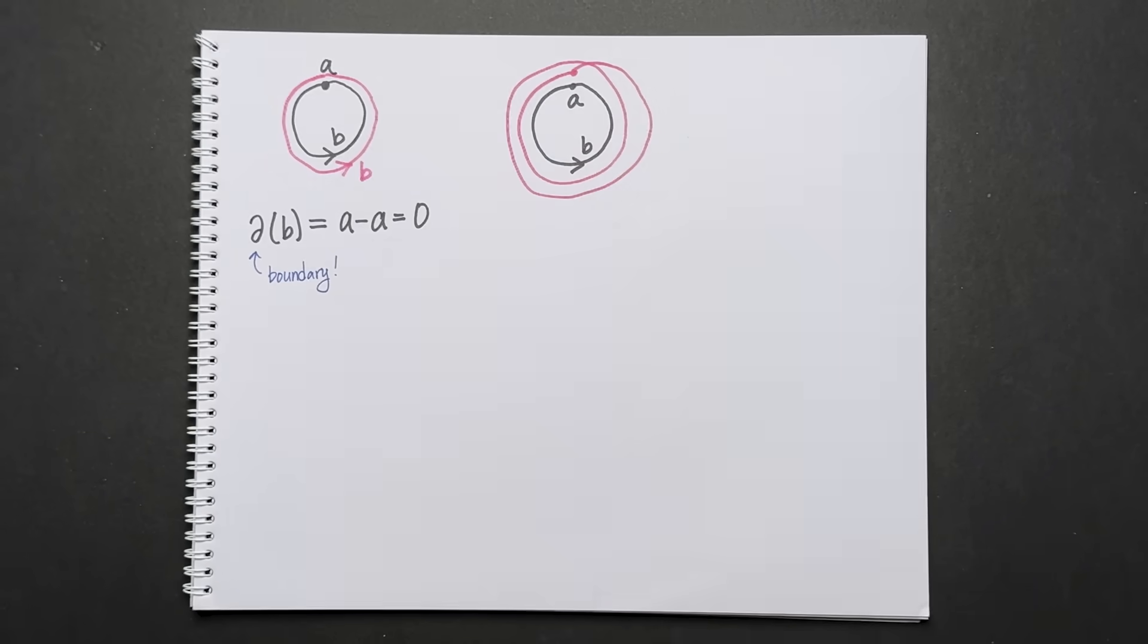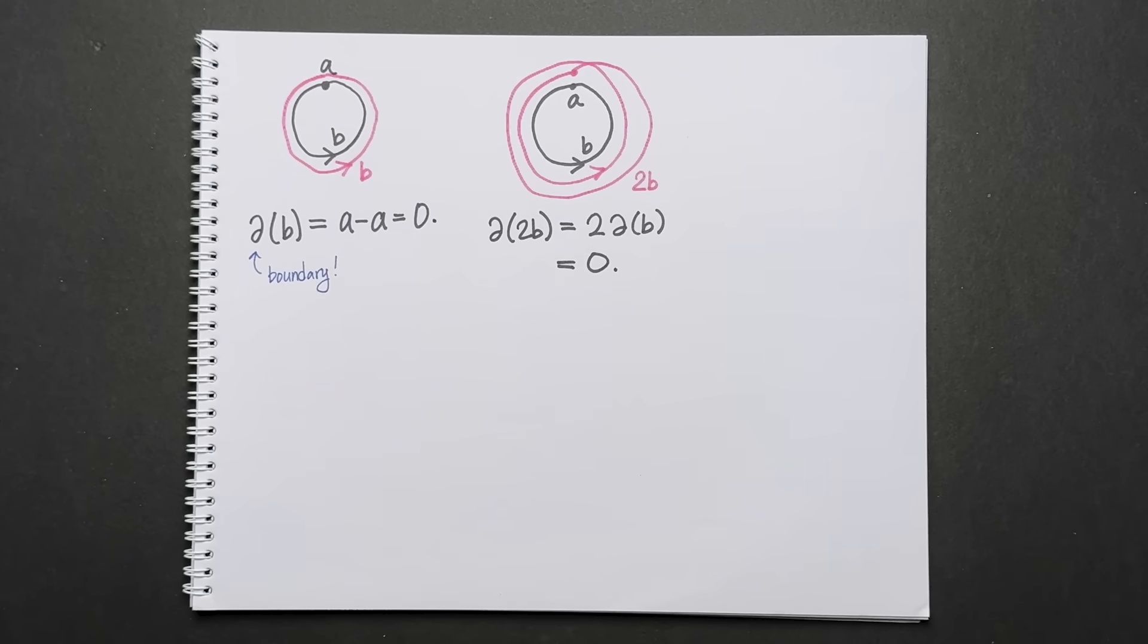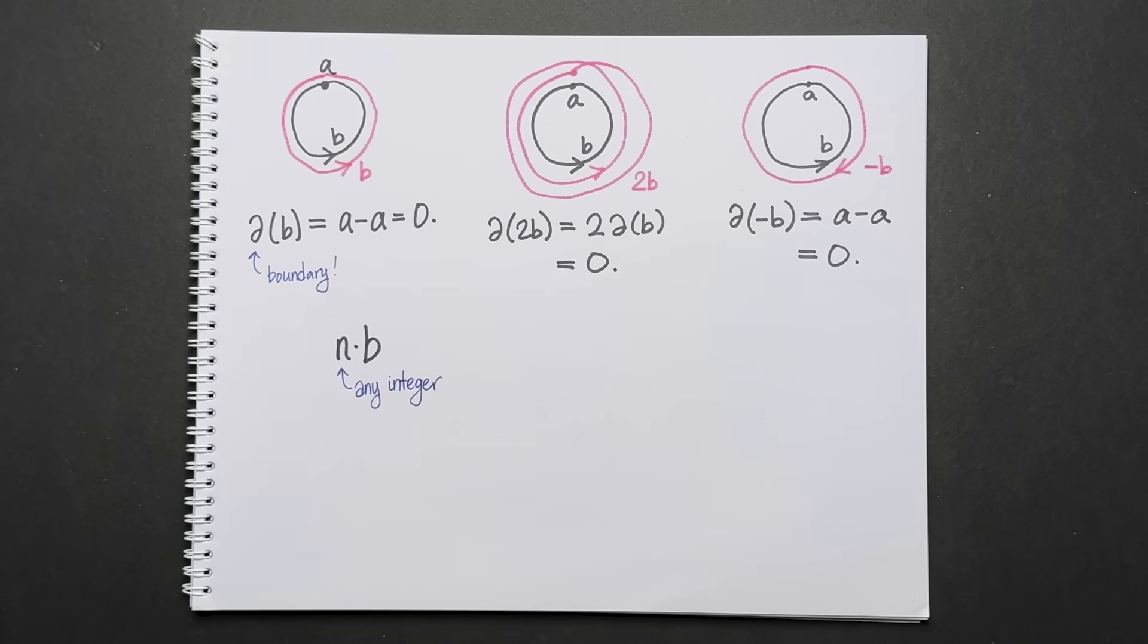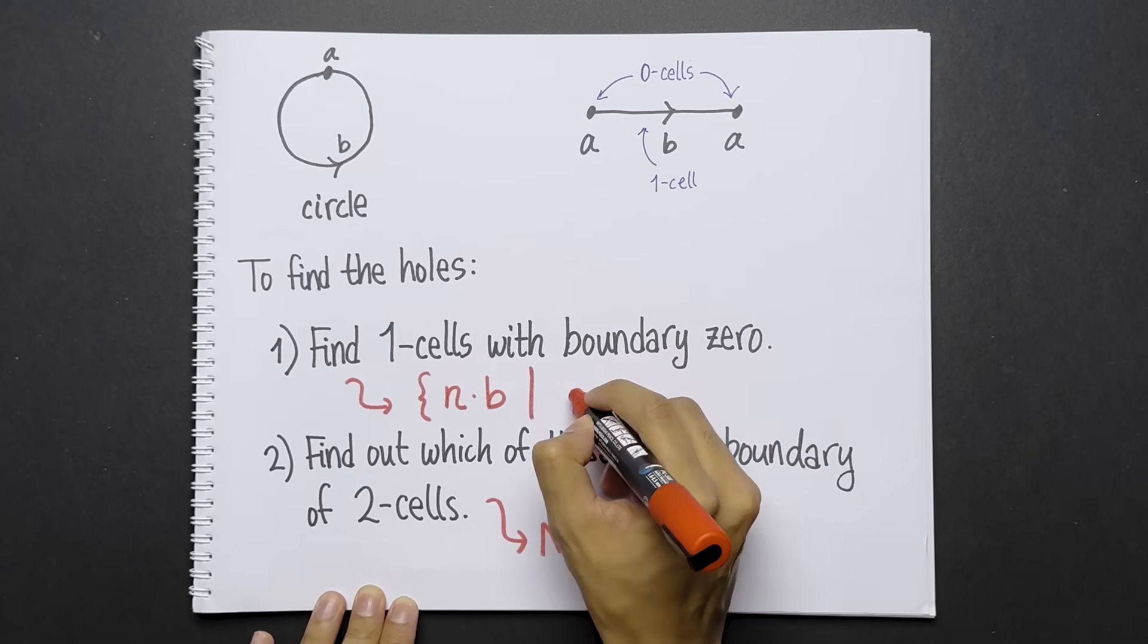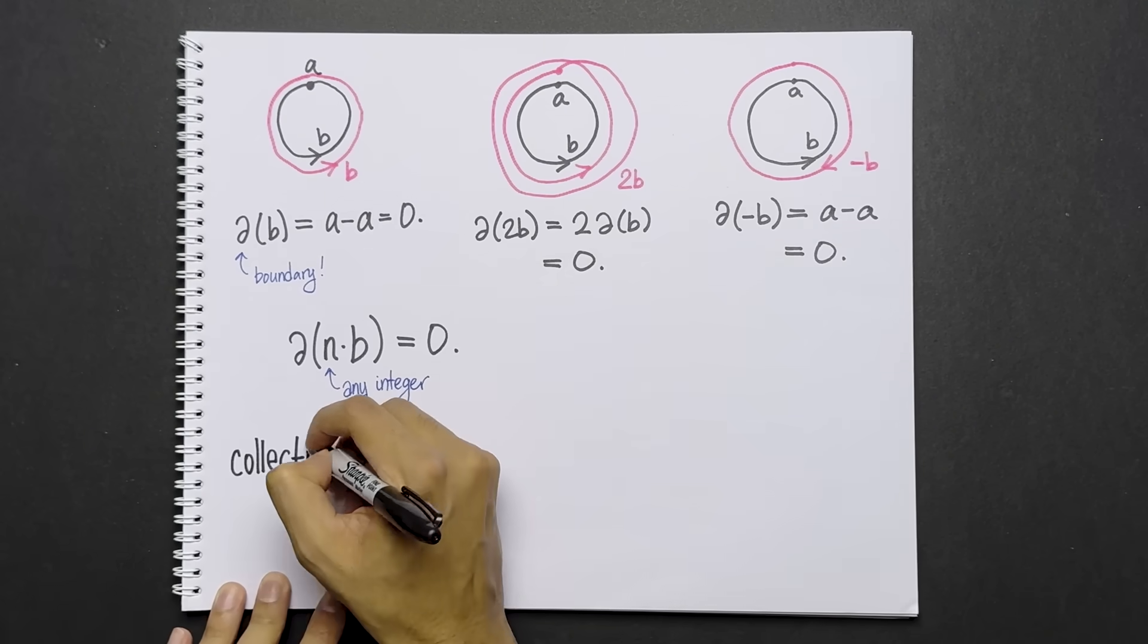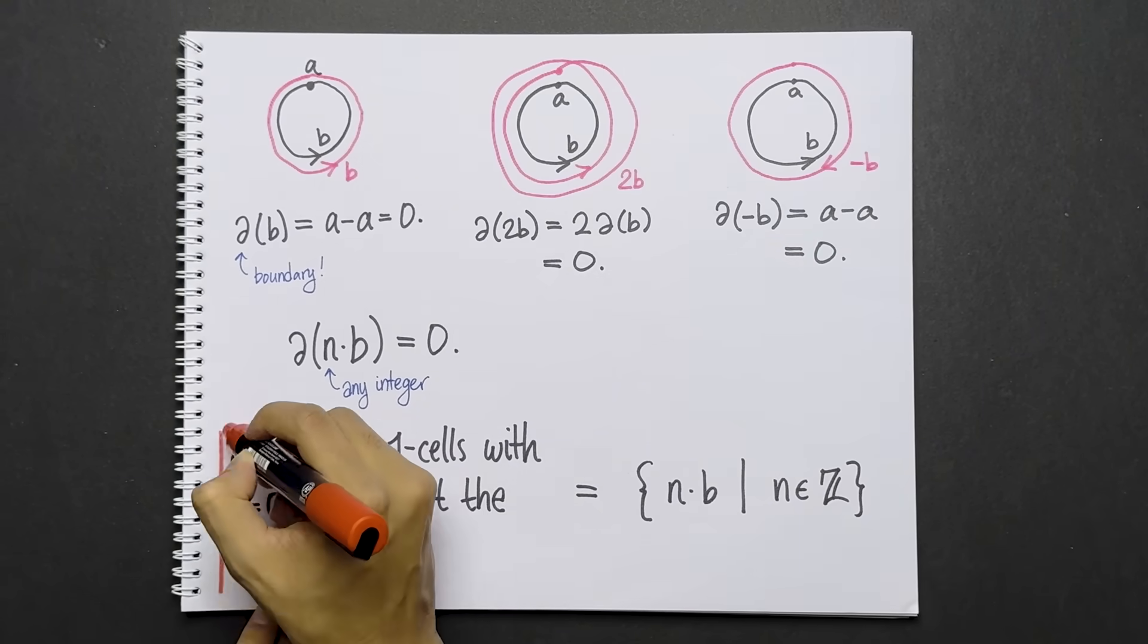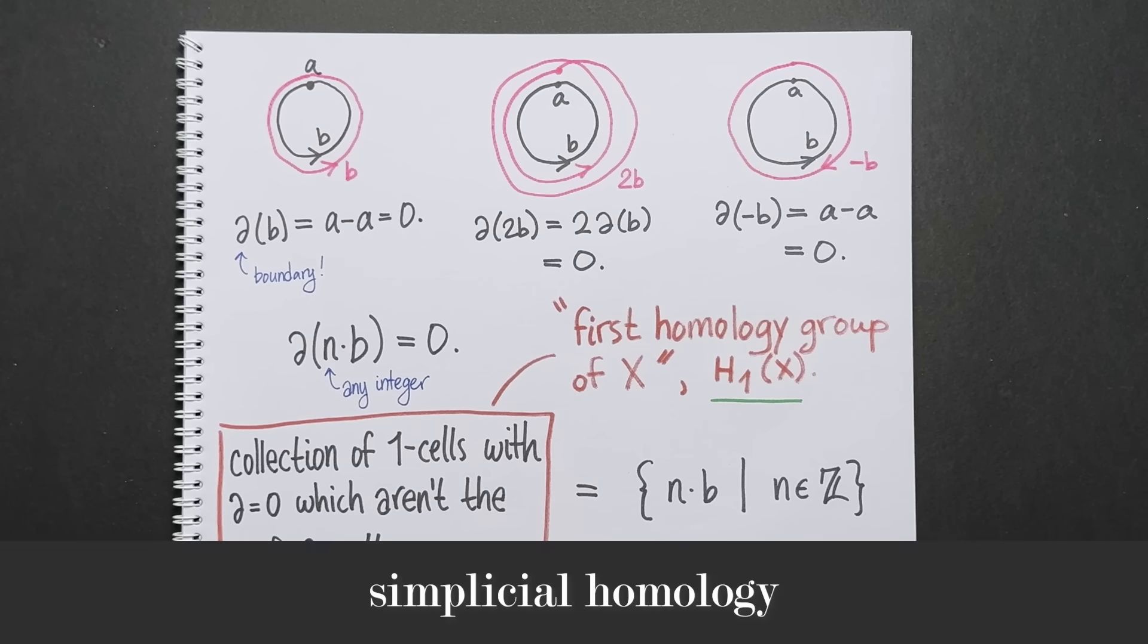But what if you go around the circle twice? This is the loop 2b. The boundary of 2b is twice the boundary of b, which is zero, because the boundary is linear. So 2b satisfies the first criterion. You can also go around the circle in the reverse direction. This is the loop minus b. Its boundary is negative 1 times the boundary of b, which is zero. So minus b also satisfies the first criterion. Now consider the loop n times b, where n is any integer. For the same reason, this loop also has boundary zero. Therefore, the one cells satisfying our criterion are n times b, where n ranges over the integers. Therefore, the one cells with boundary zero, which are not the boundaries of two cells, is the set n times b, where n ranges over integers. Since this is a mouthful, topologists have a name for it. The first homology group of the circle x, denoted h1 of x. This definition of homology is sometimes called simplicial homology, because simplicies are another word for cells.